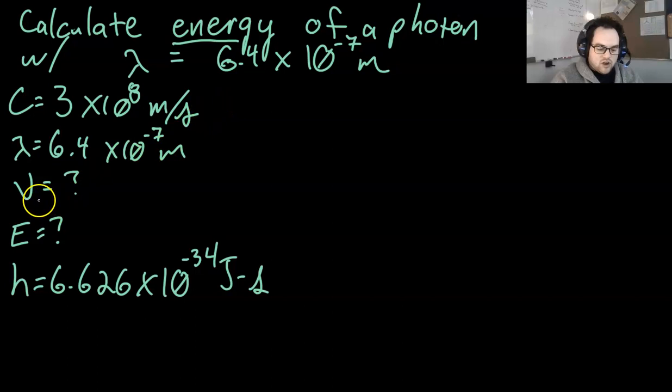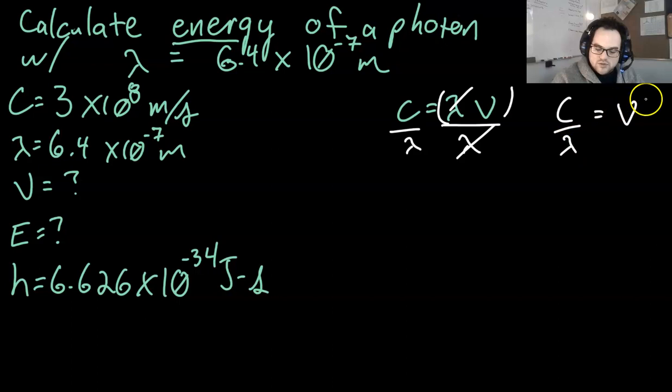Alright, now to find our frequency we need to rearrange the light equation a little bit. So, instead of using C equals lambda nu, we divide both sides by the wavelength so it goes away over there and now we can just use C divided by wavelength equals frequency.